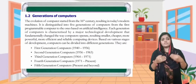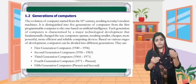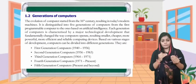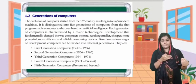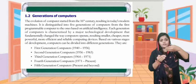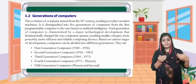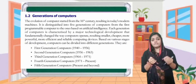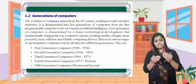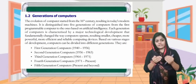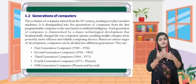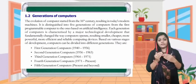The evolution of computers is distinguished into five generations, from the first programmable computers to those based on artificial intelligence. Each generation is characterized by a major technological development that fundamentally changed the way computers operate, resulting in smaller, cheaper, more powerful, more efficient, and reliable computing devices.